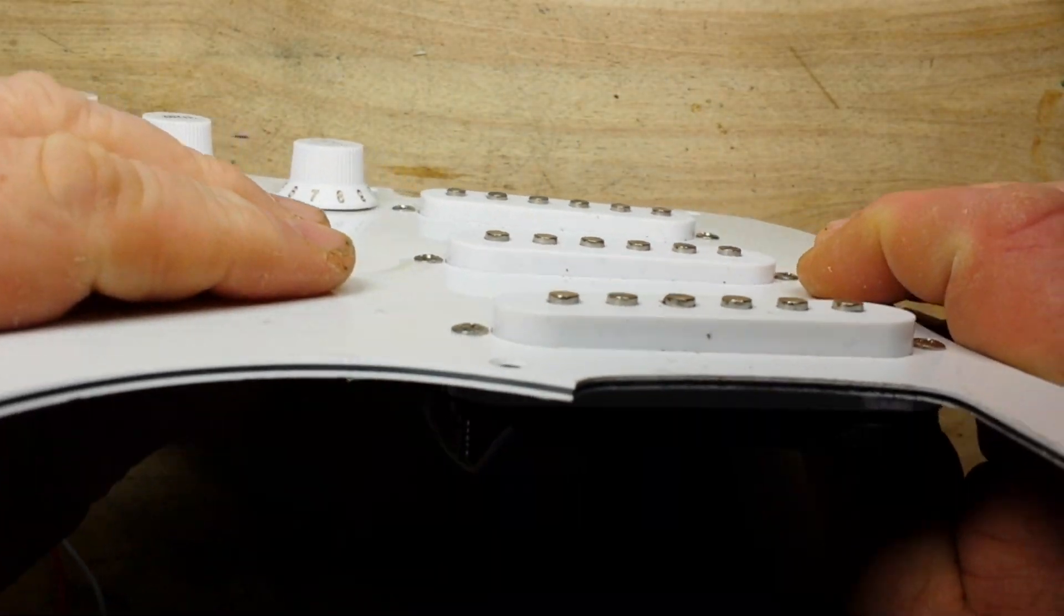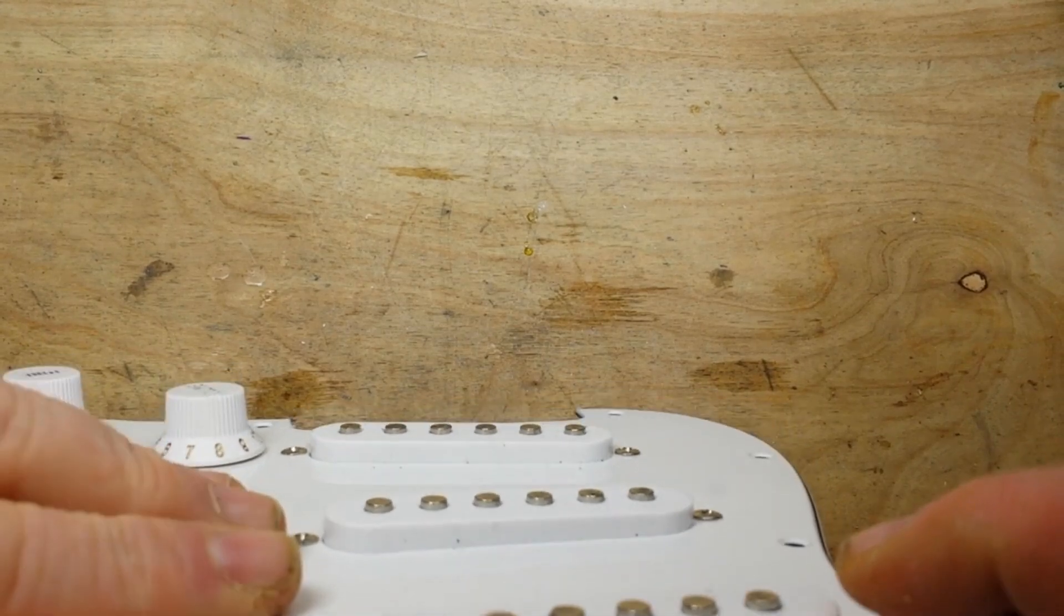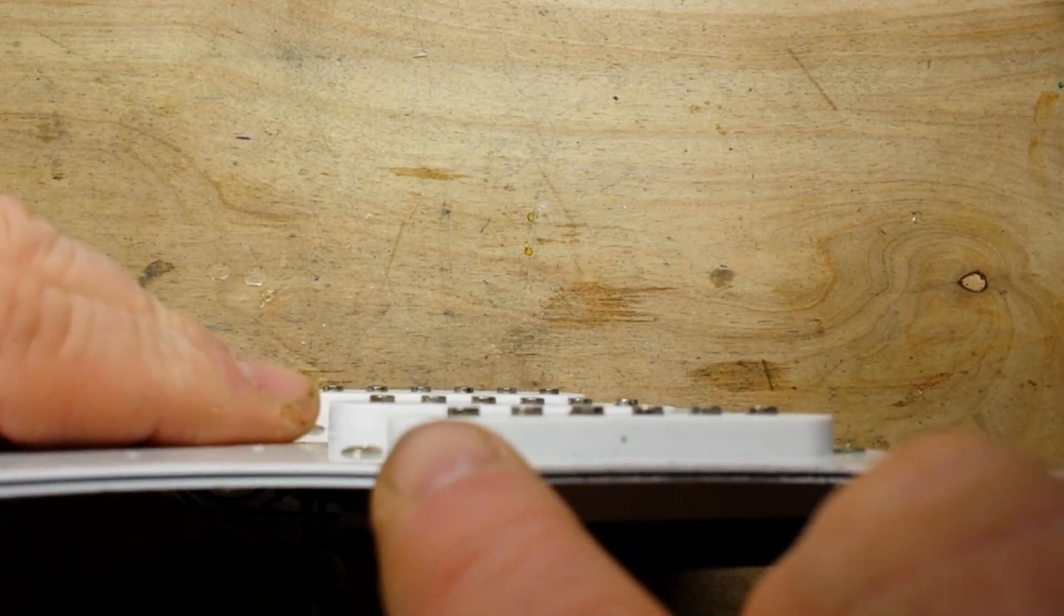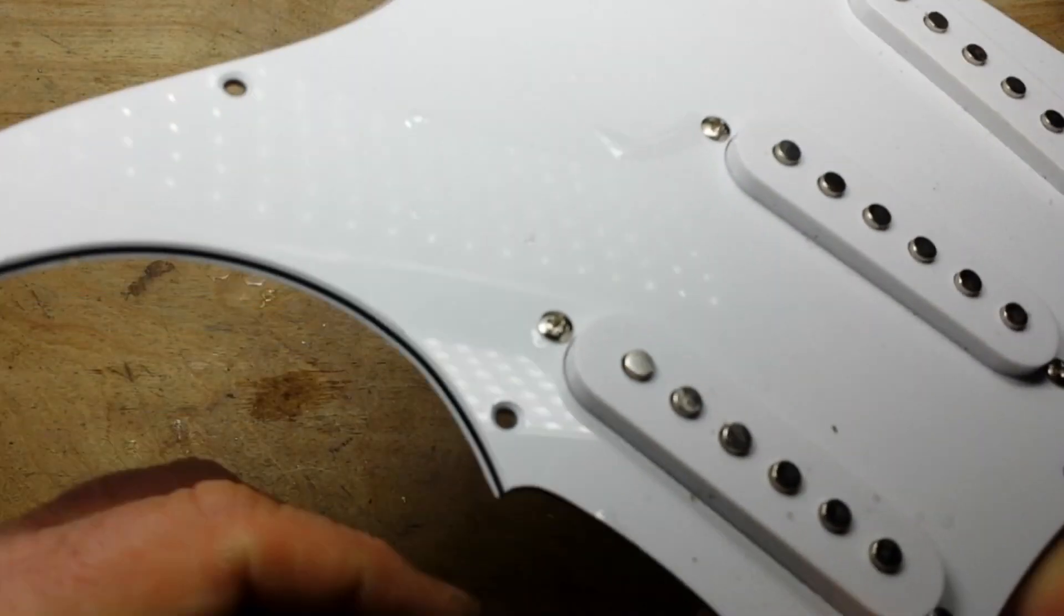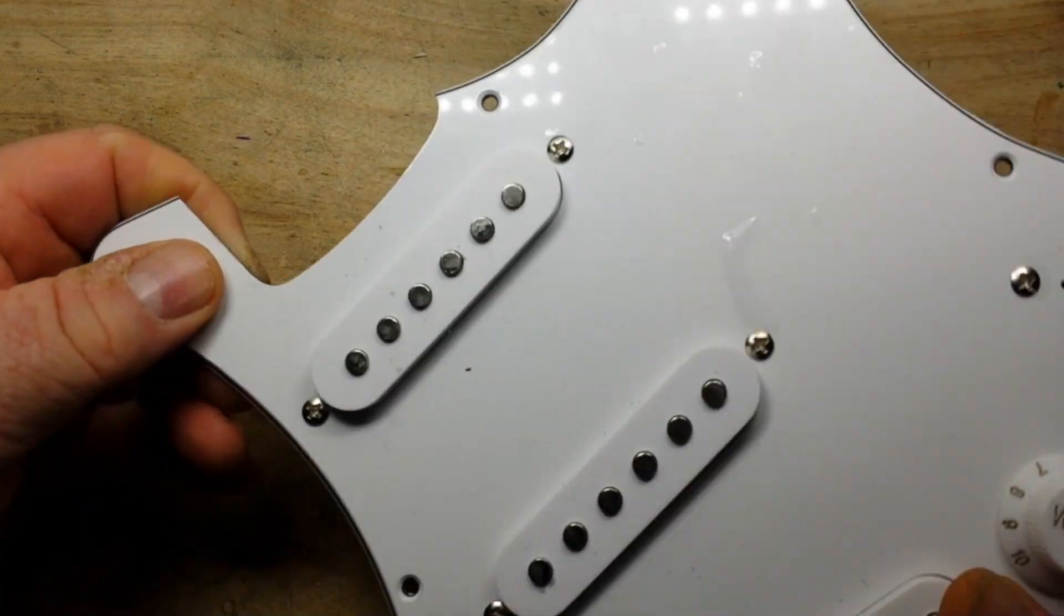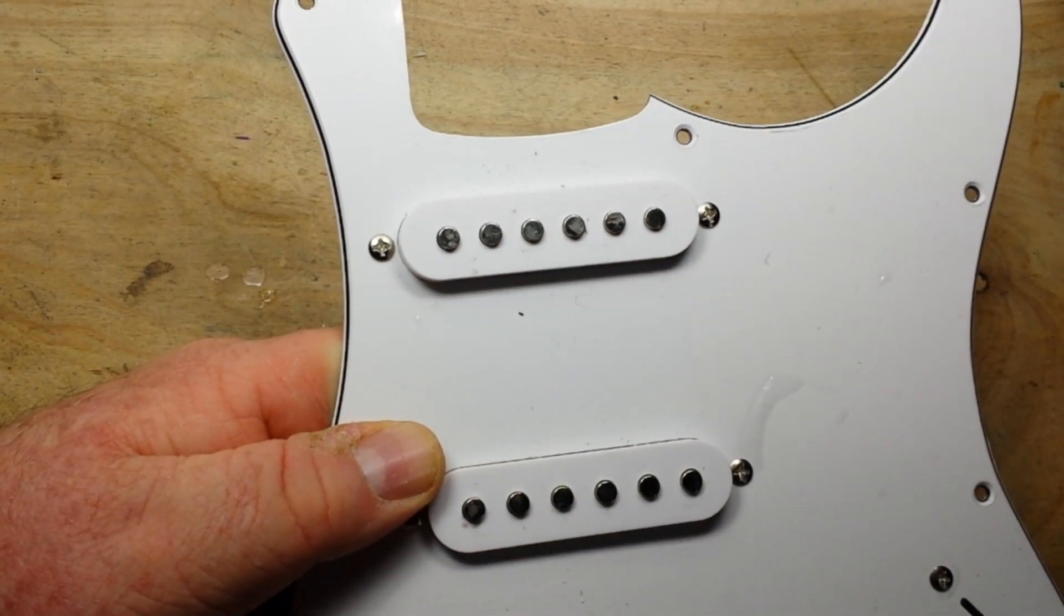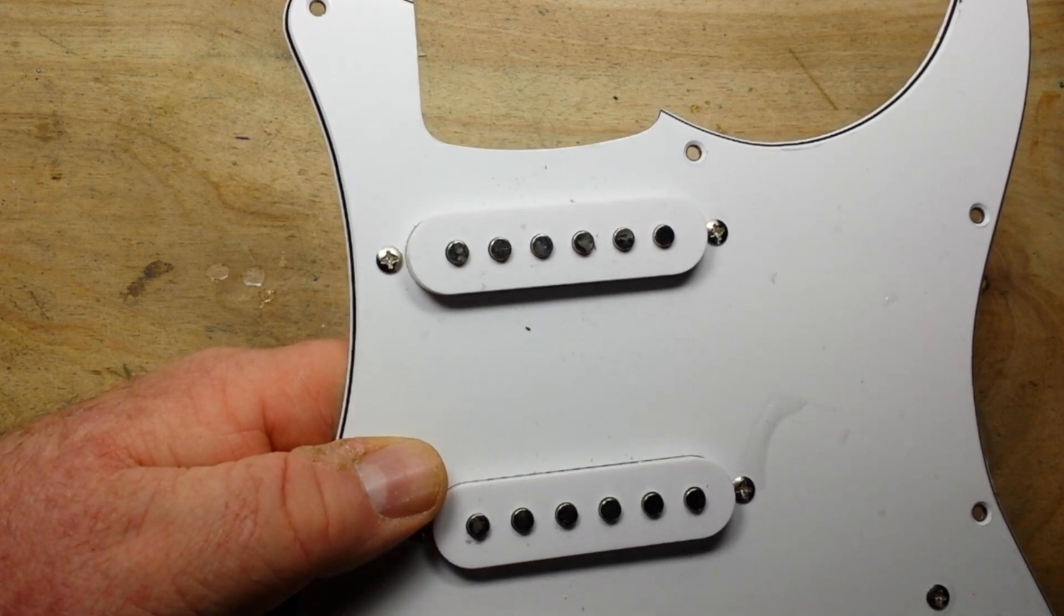And if you look at them edge on, you can see they are actually arranged in a slight arc, and that is to match the curve of the fretboard. And you'll see there are six pole pieces which correspond to the six strings of an electric guitar.